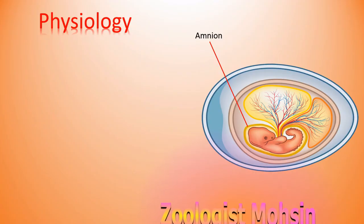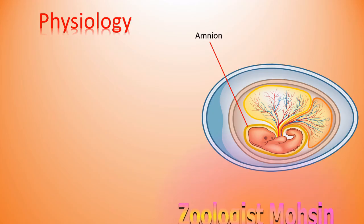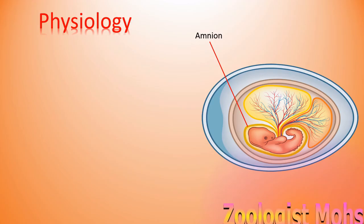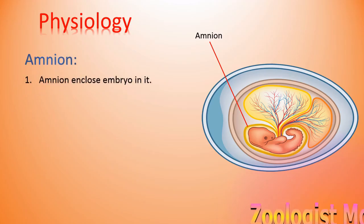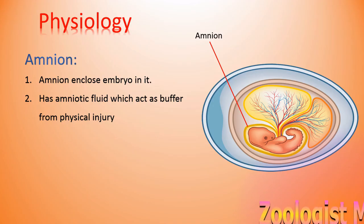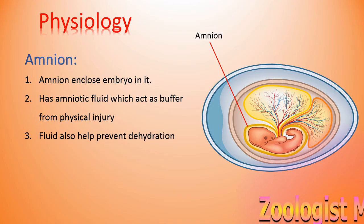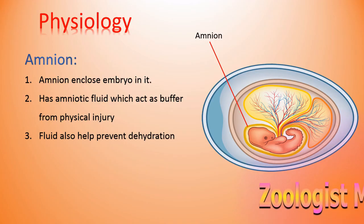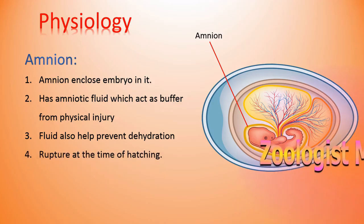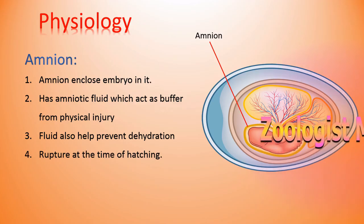The next structure is the amnion — the structure due to which we call the egg an amniotic egg. The amnion encloses the embryo within it. It contains amniotic fluid that acts as a buffer against physical injury and also helps prevent dehydration of the embryo. It ruptures at the time of hatching or after birth.